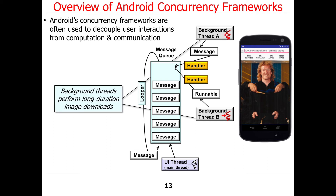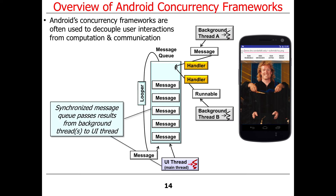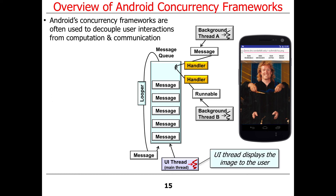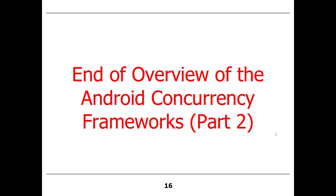For example, background threads performing long-duration operations like downloading images feed into a synchronized message queue, which conveys messages or runnables to the Looper managed by the UI thread. Those are then dispatched in the context of the user interface thread, ensuring the constraint is always honored. The UI thread can then do something to interact with the user, like displaying an image, which cannot be displayed directly by the background thread.